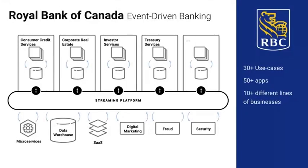In the banking industry, Royal Bank of Canada is my favorite example of an organization that progressed from the pre-streaming world all the way to having a central nervous system. Just a few years ago they started their streaming journey with the goal of freeing data from mainframes by streaming it to Kafka. Today they have 30-plus use cases across 50-plus applications running across 10-plus different lines of businesses — powering a transformation from mainframe-based monolithic applications to cloud-native microservices, lowering anomaly detection time from weeks to real-time, and sharing data easily across business units.